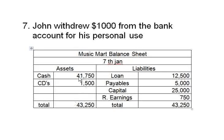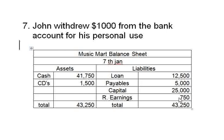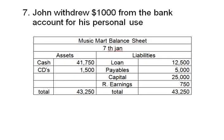Cash reduces from 42,750 to 41,750 as cash moves out of the company. There are two ways to show this: a reduction in capital or a reduction in retained earnings. In this example we show a reduction in retained earnings. If removed from capital, it means John is withdrawing his investment; if removed from retained earnings, it means he is enjoying the company's profits. Since he is the sole owner, he can do that, though it differs when there are other members in the company.